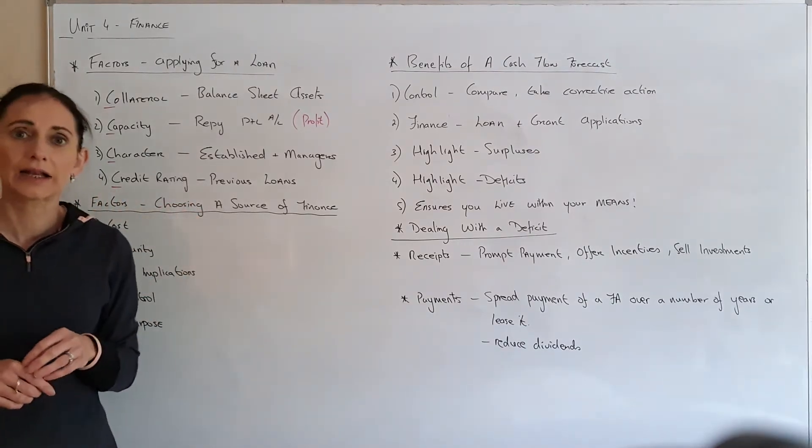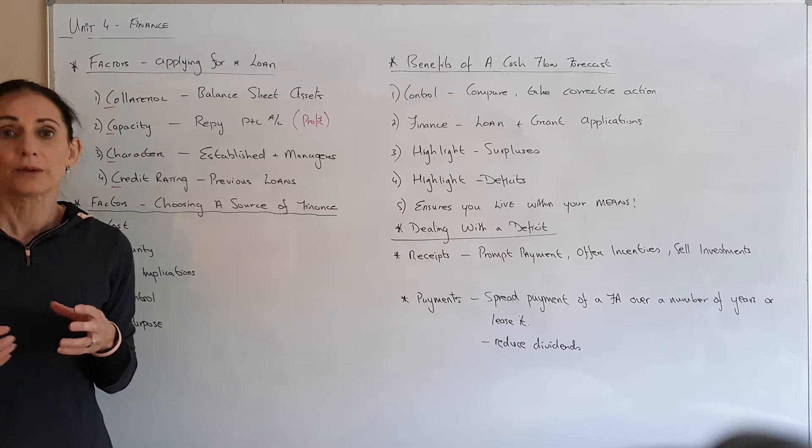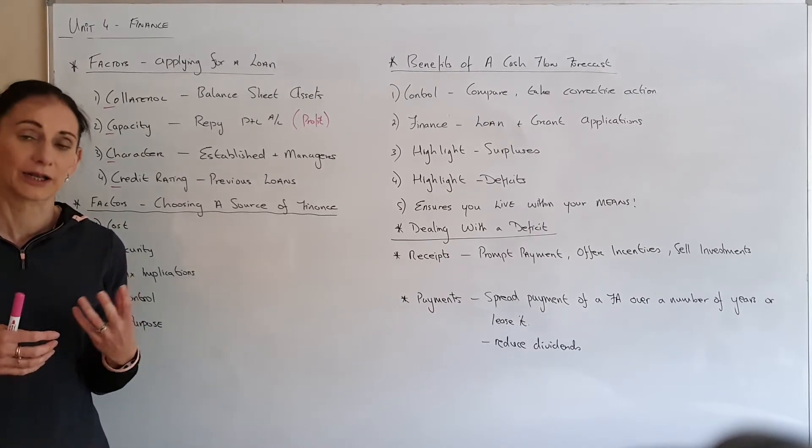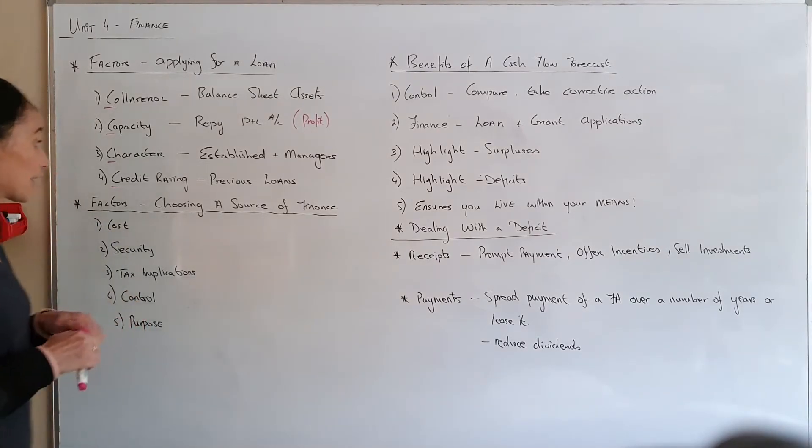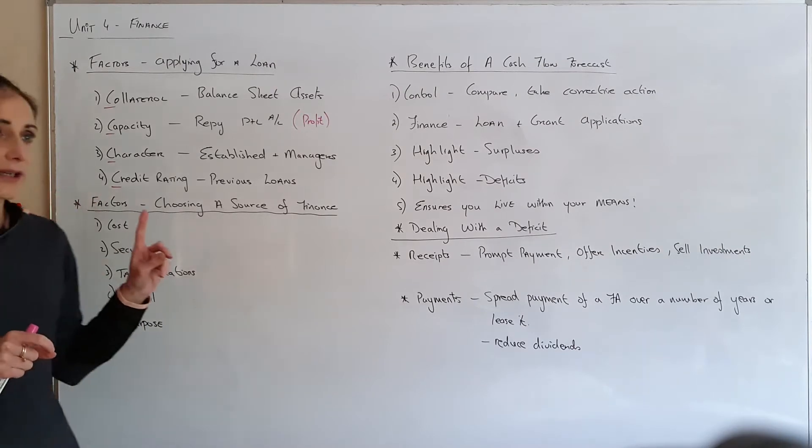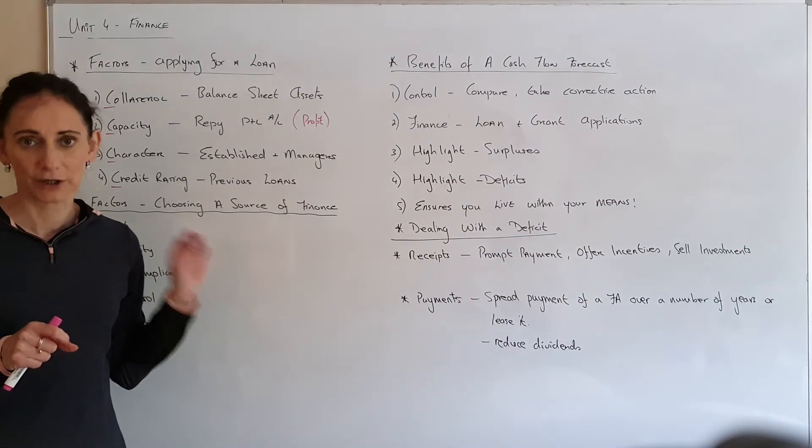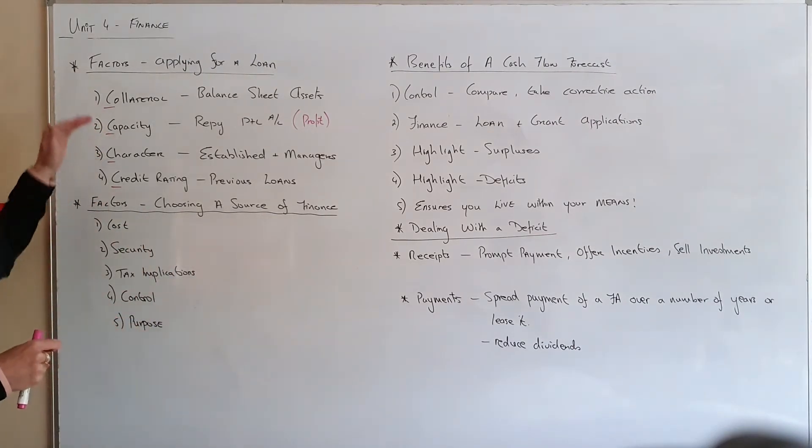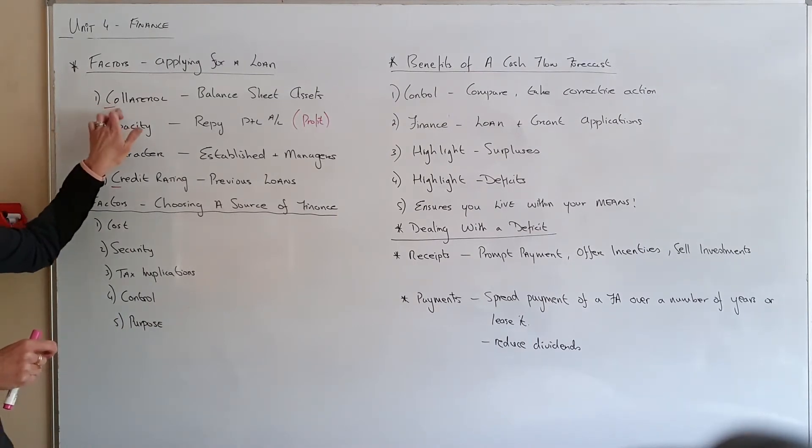Credit rating: you want to know what their past record has been like when they have had loans and whether they're paying back on time. Just be careful in the exam whether they're asking from a business or household point of view. It's the four C's: collateral, capacity, character, and credit rating.